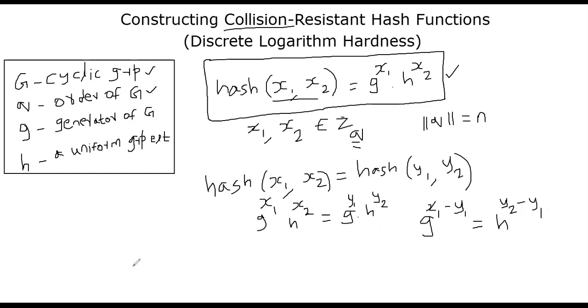If y2 minus x2 is 0 in your mod q, what can you tell? Well, you can tell x1 must be equal to y1 because h is the group element. That means h can be represented as g power something, but that is contradiction.